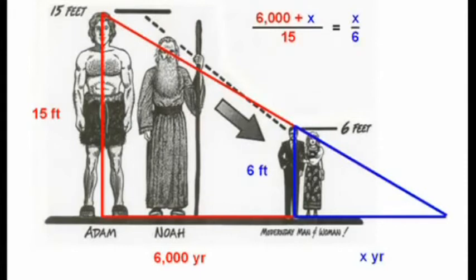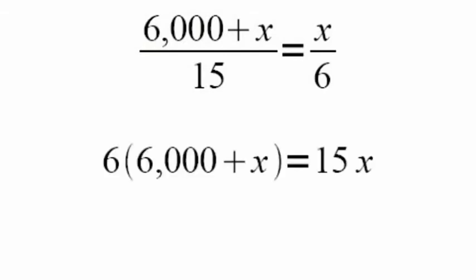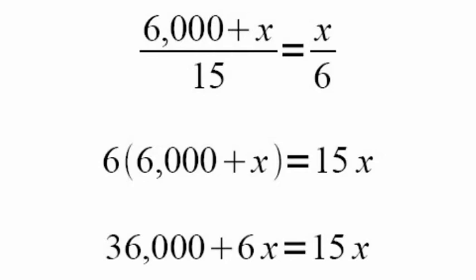Now we have an algebra problem. 6,000 plus X over 15 is equal to X over 6. Cross multiply by 6 and 15 to clear fractions. Distribute the factor of 6 to get 36,000 plus 6X is equal to 15X.